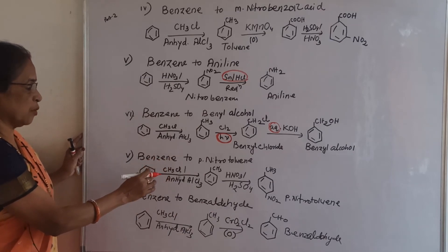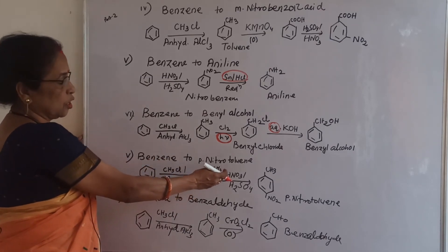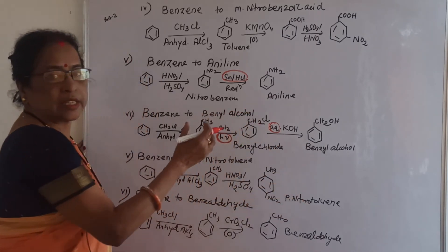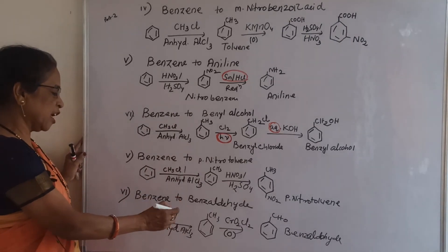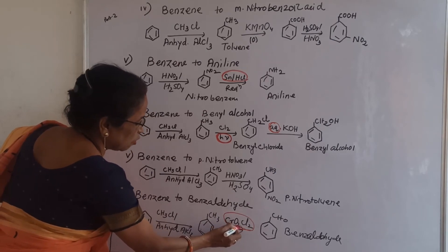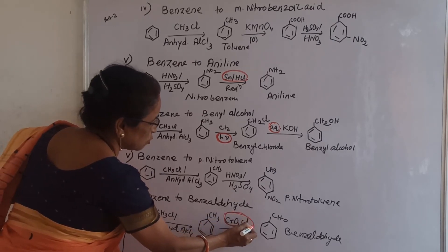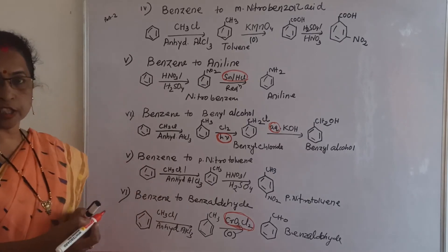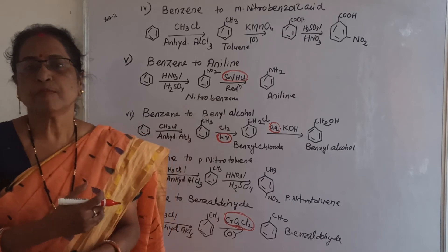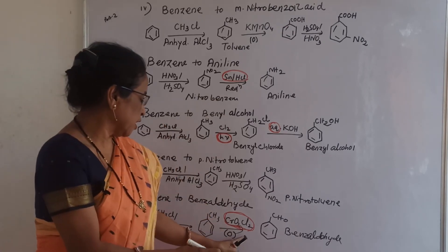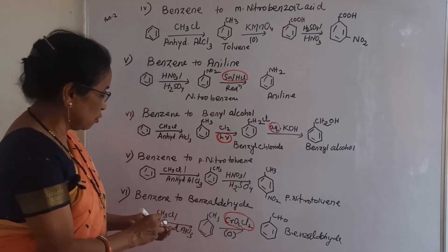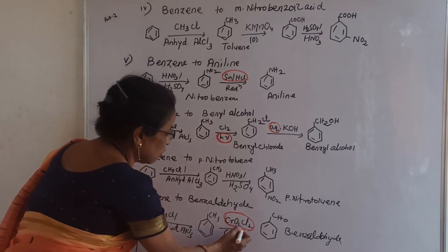Benzene to para-nitroaniline: use toluene, nitrate to get ortho and para products, major product is para-nitrotoluene. For benzene to benzaldehyde: prevent oxidation using CrO2Cl2. If not, oxidation proceeds to benzoic acid. CrO2Cl2 prevents further oxidation and stops at benzaldehyde.